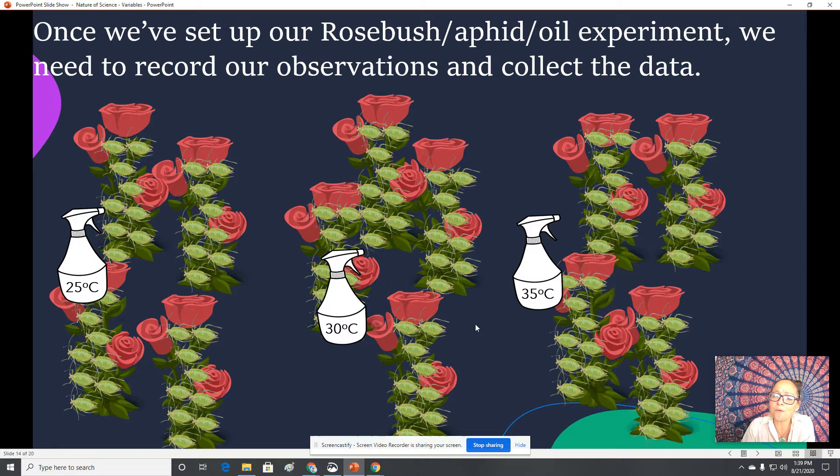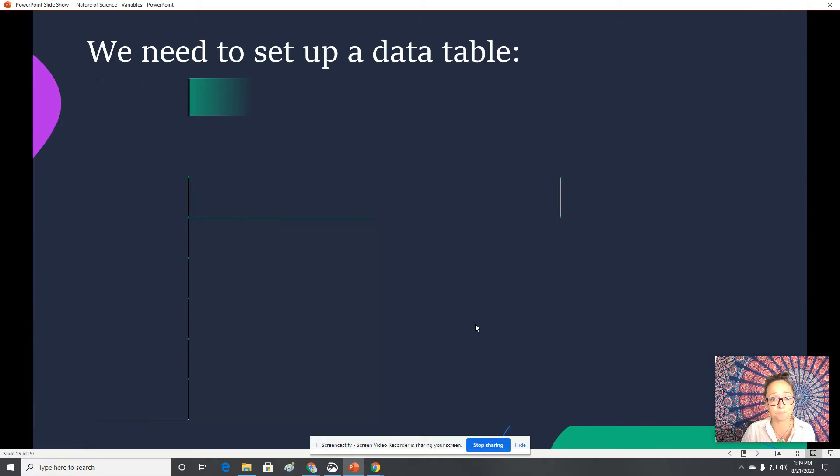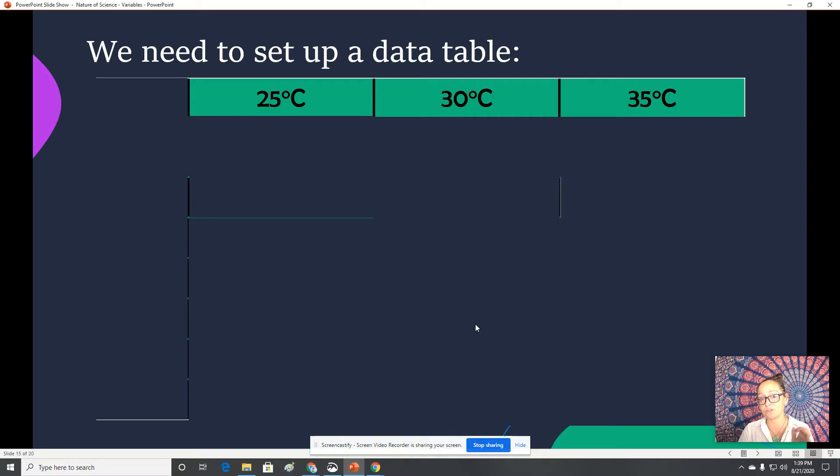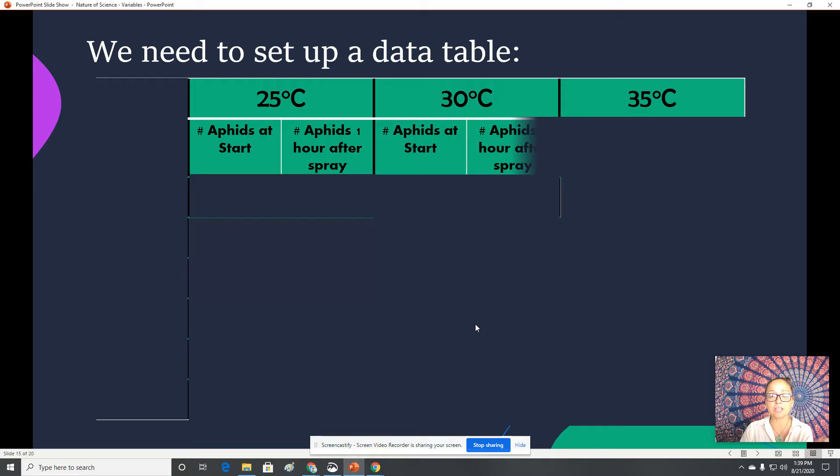We have our 25 degrees Celsius, 30 degrees Celsius, and 35 degrees Celsius. Now we need to set up a chart on how we can record our data and our observations. So we want to make sure we include a category for 25 degrees, 30 degrees, and 35 degrees. We want to write down how many aphids we started with and how many we ended with after an hour, like how many died. So we do that for each of our three groups.